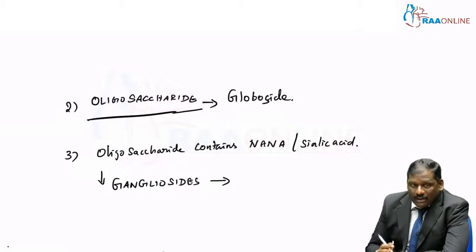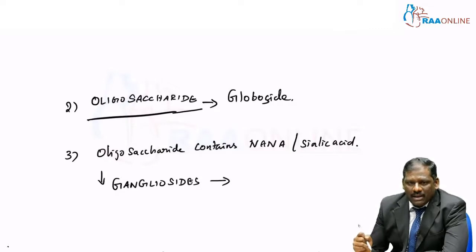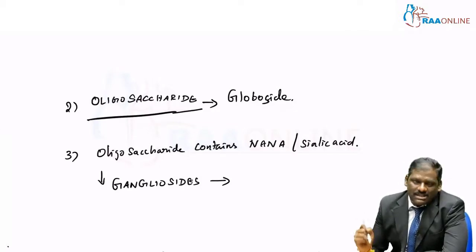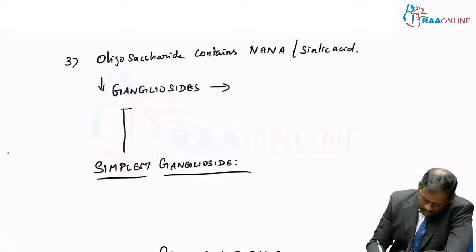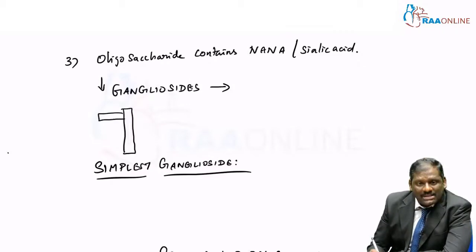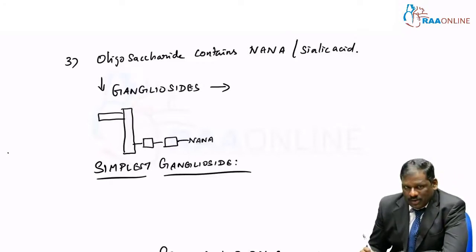Now we have got another set called as oligosaccharide which is associated with NANA, otherwise called as NANA or N-acetylneuraminic acid, otherwise called as sialic acid. The structure will be: we have got the central sphingosine alcohol here, we have got the fatty acid here, and we have got the oligosaccharide here, and finally there will be sialic acid attached to one end. This will be the structure for gangliosides.